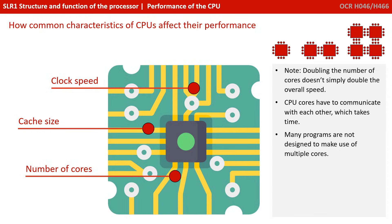CPU cores have to communicate with each other. The more cores you have, the more communication needs to take place to keep everything in sync, and this costs time and efficiency. On top of this, many programs are simply not designed to make maximum use out of multiple cores.